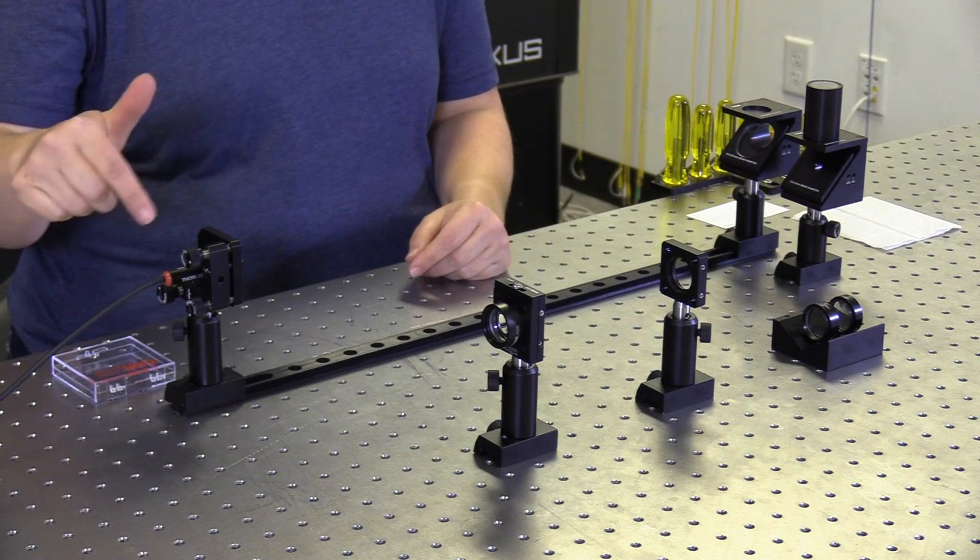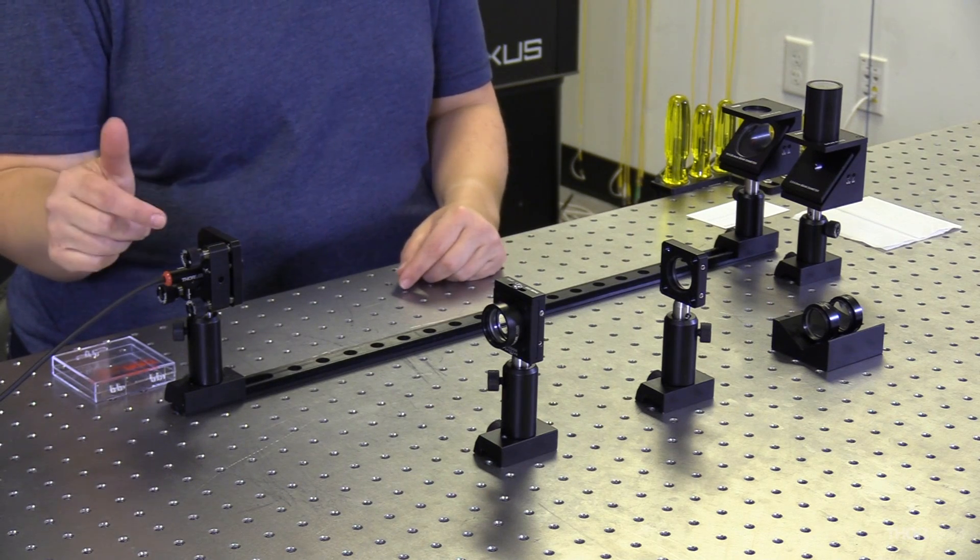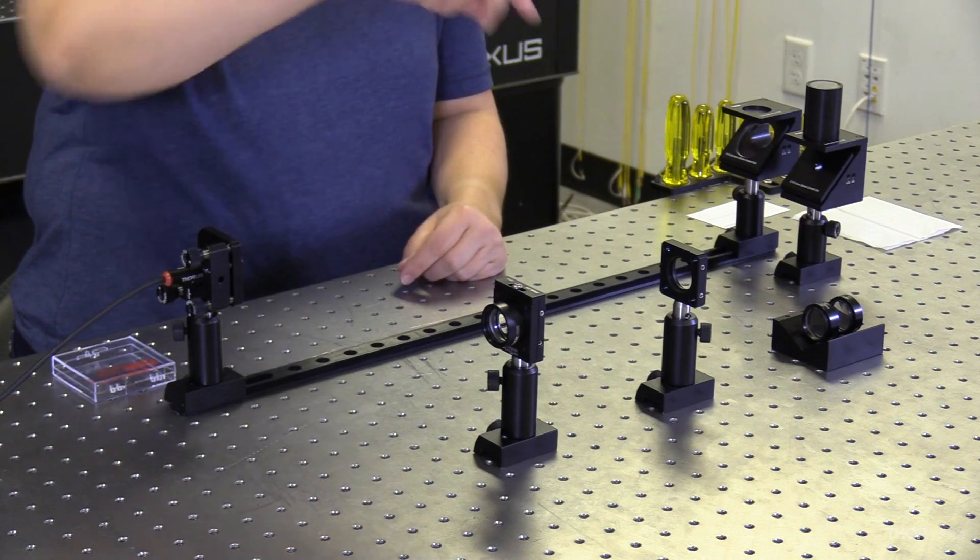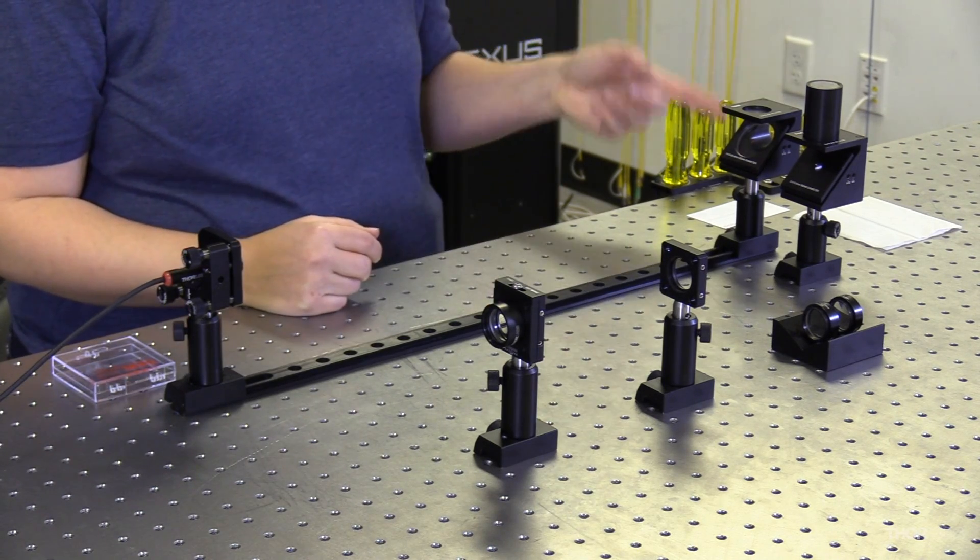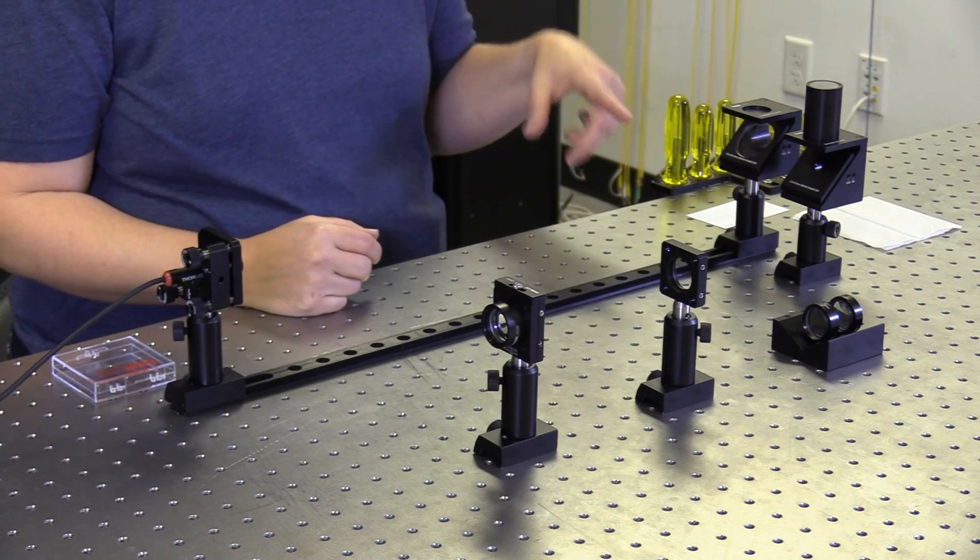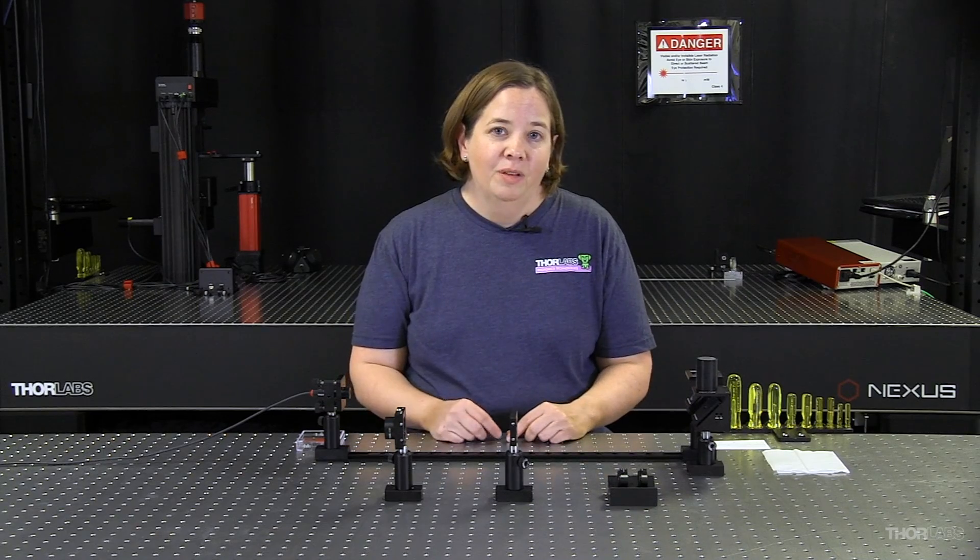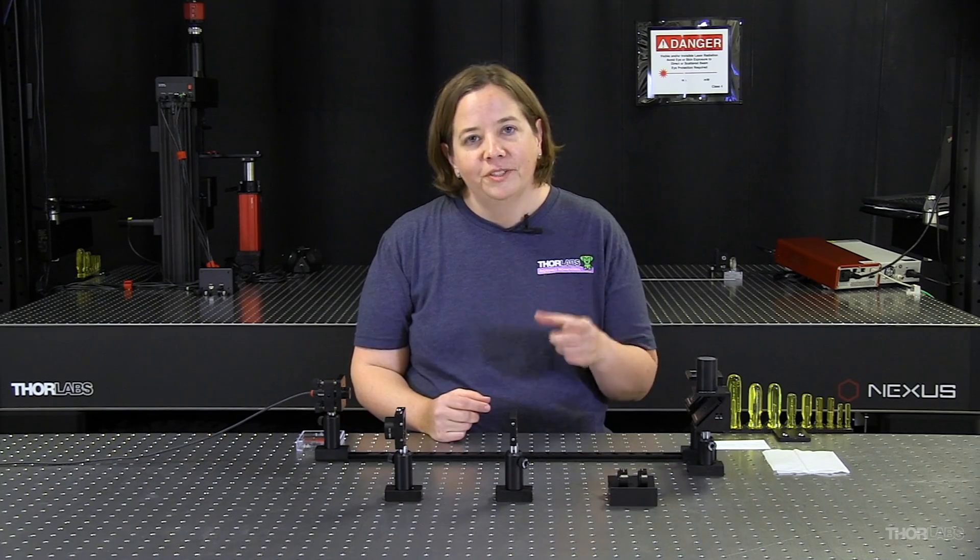I have here a little compact laser that's less than 2 milliwatts. I also have a series of three lenses that we can use to change the beam diameter. I have two shearing interferometers with a set of different accessories to measure the collimation of both small diameter and larger diameter beams.